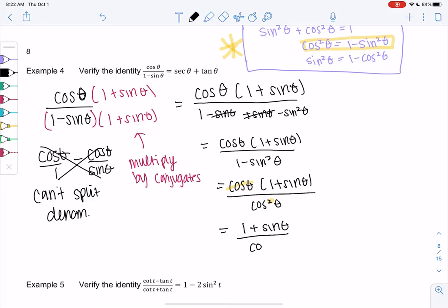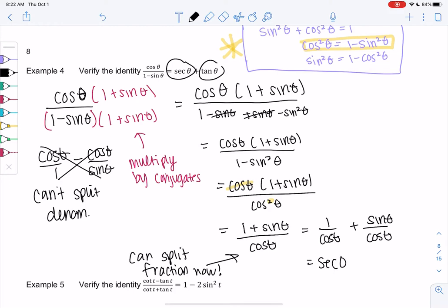Now we can split the fraction - this is different because there's a single term in the bottom. One over cosine plus sine over cosine, which is secant plus tangent. We did it! It's really nice to get a single term in the denominator, there's more you can do with that.